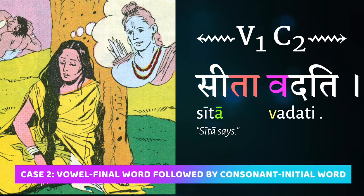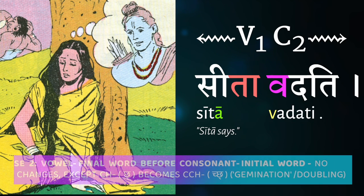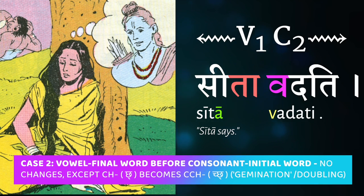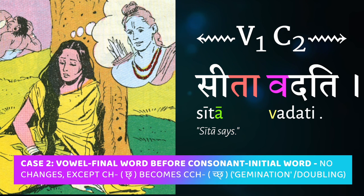Case number two is when a vowel-final word is followed by a consonant-initial word — meaning a word that ends in a vowel comes before a word that starts with a consonant. Here too, in the vast majority of cases, nothing is going to happen. There's no change and the two words just sit as they are, written separately.